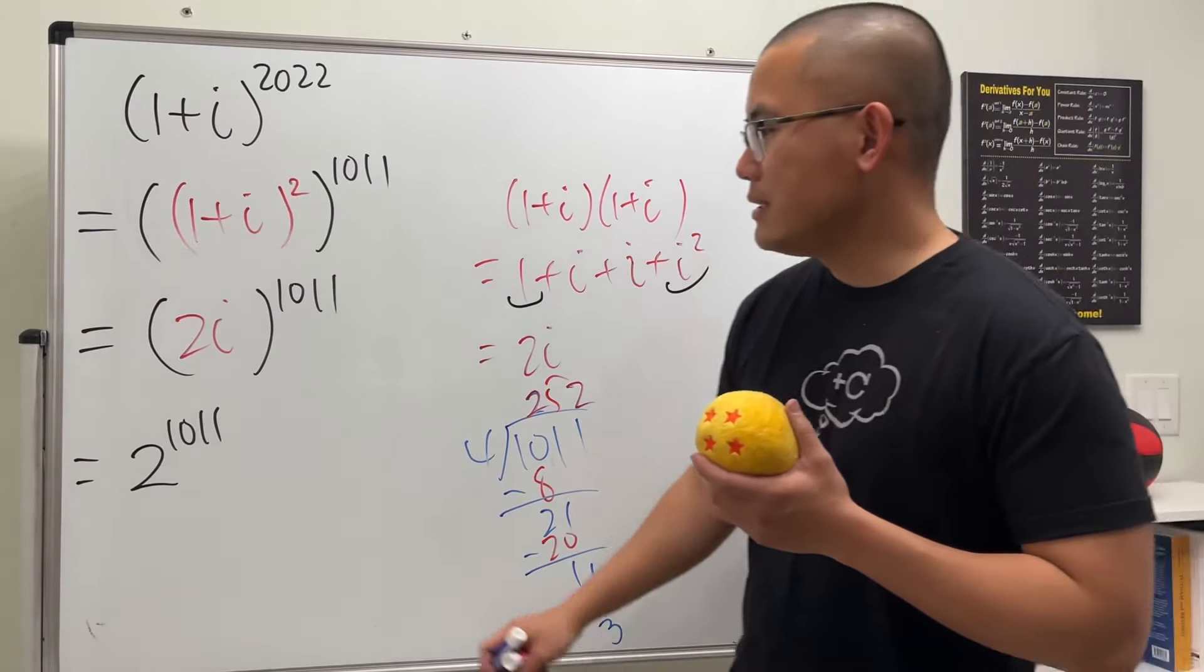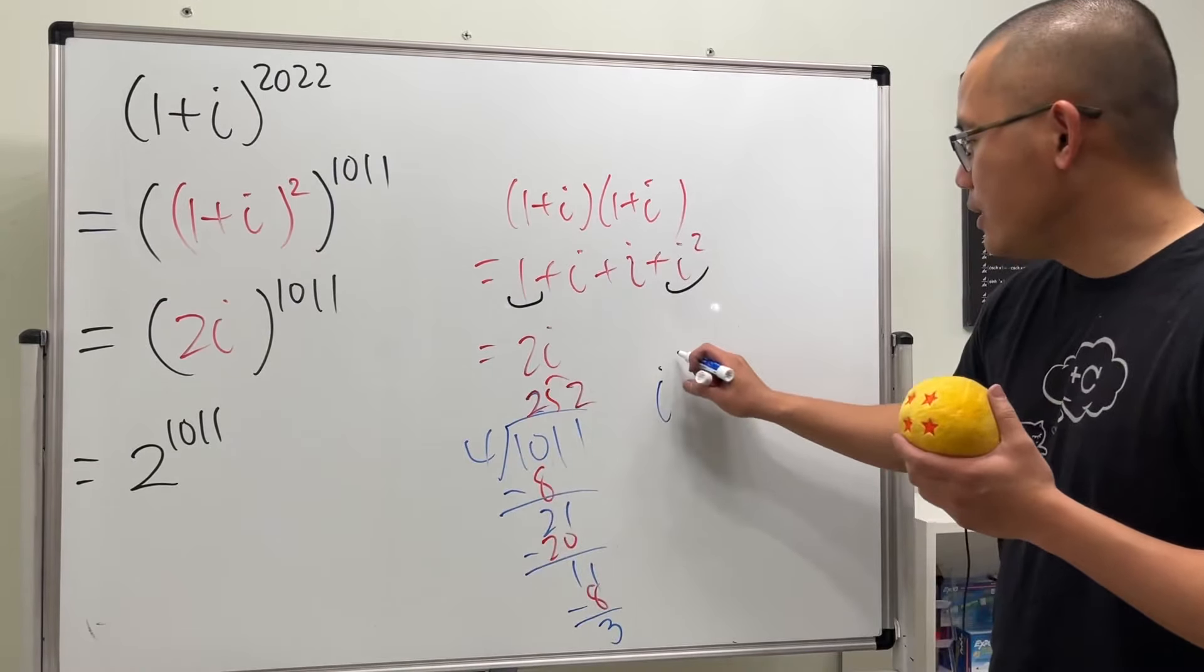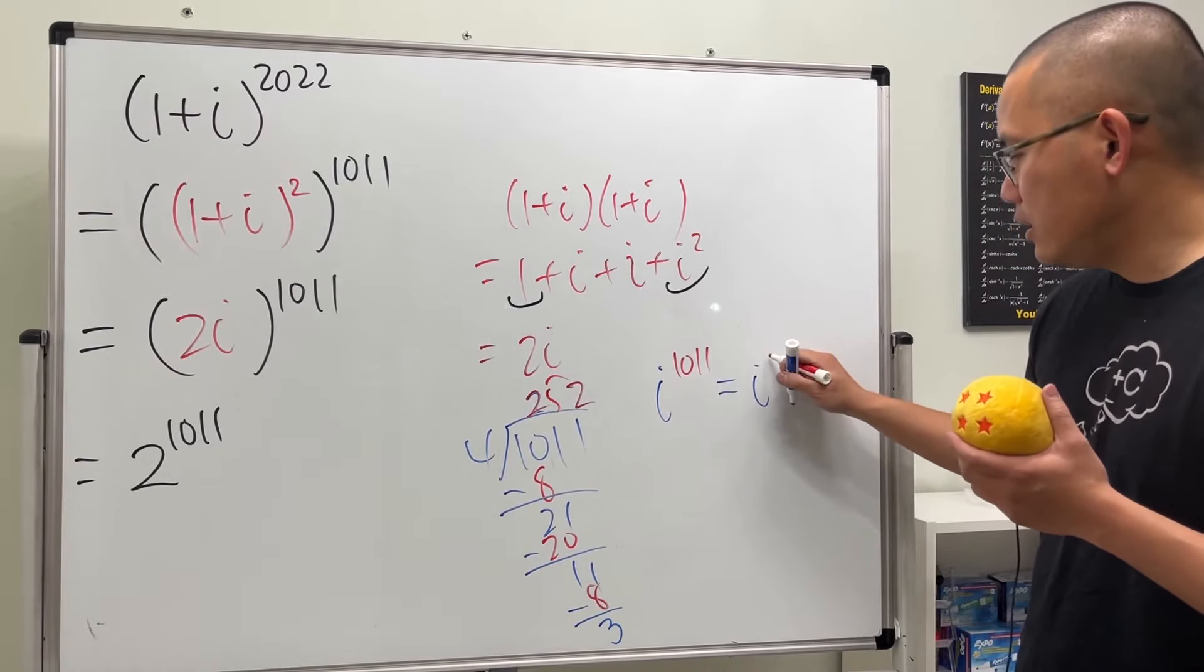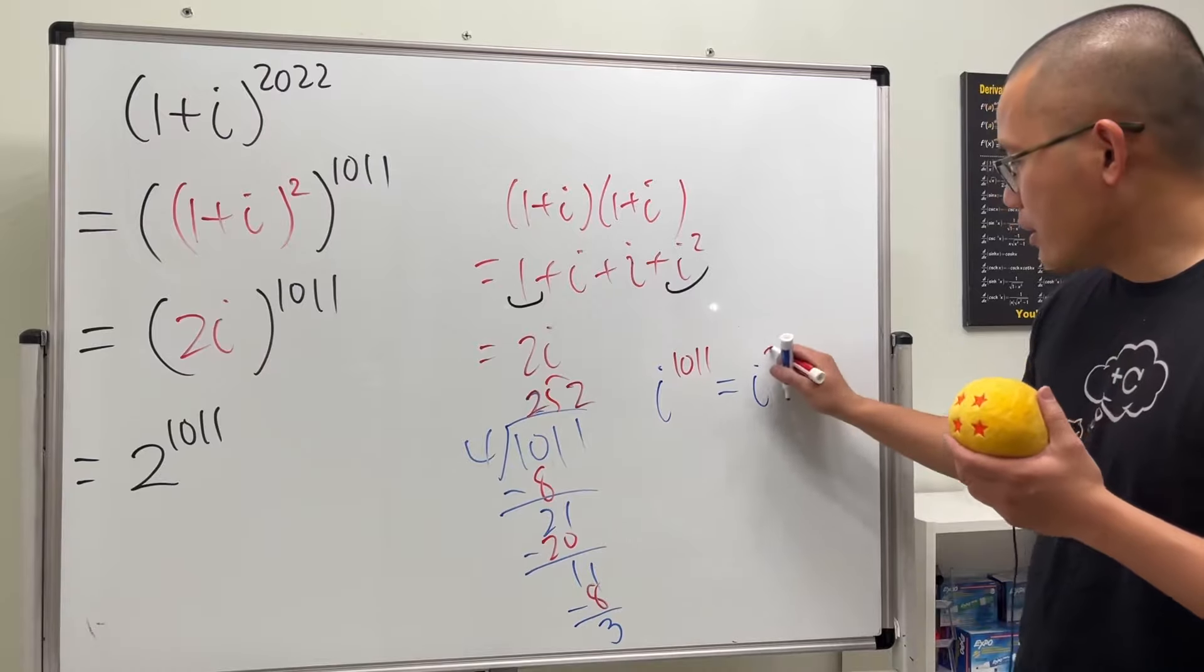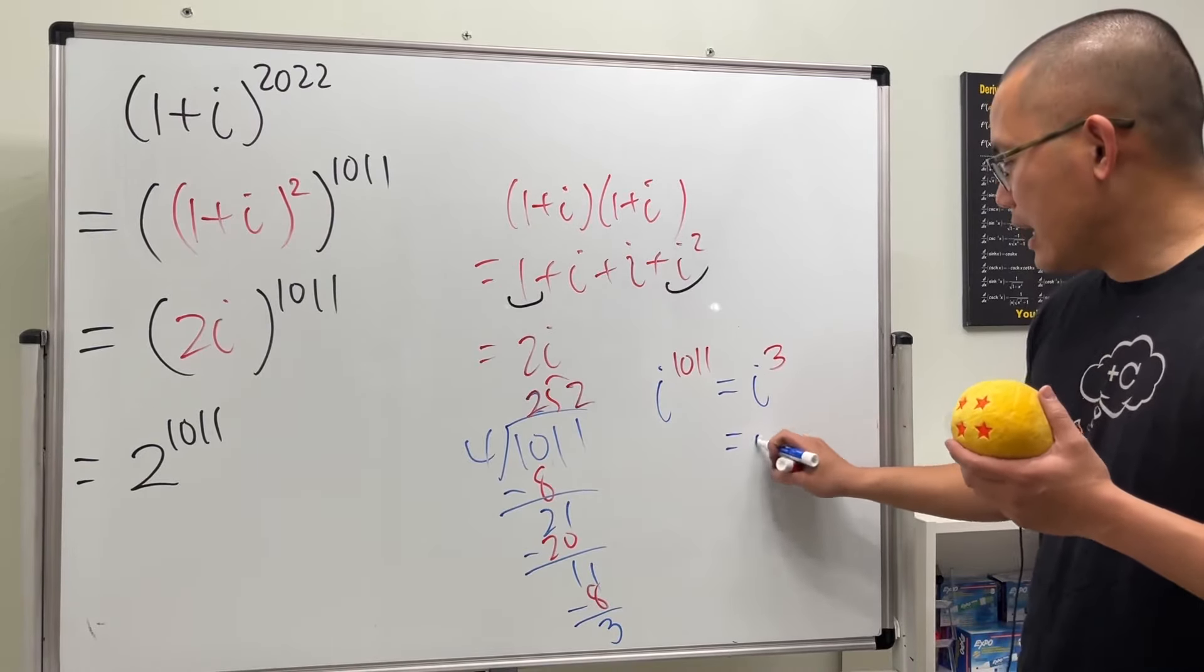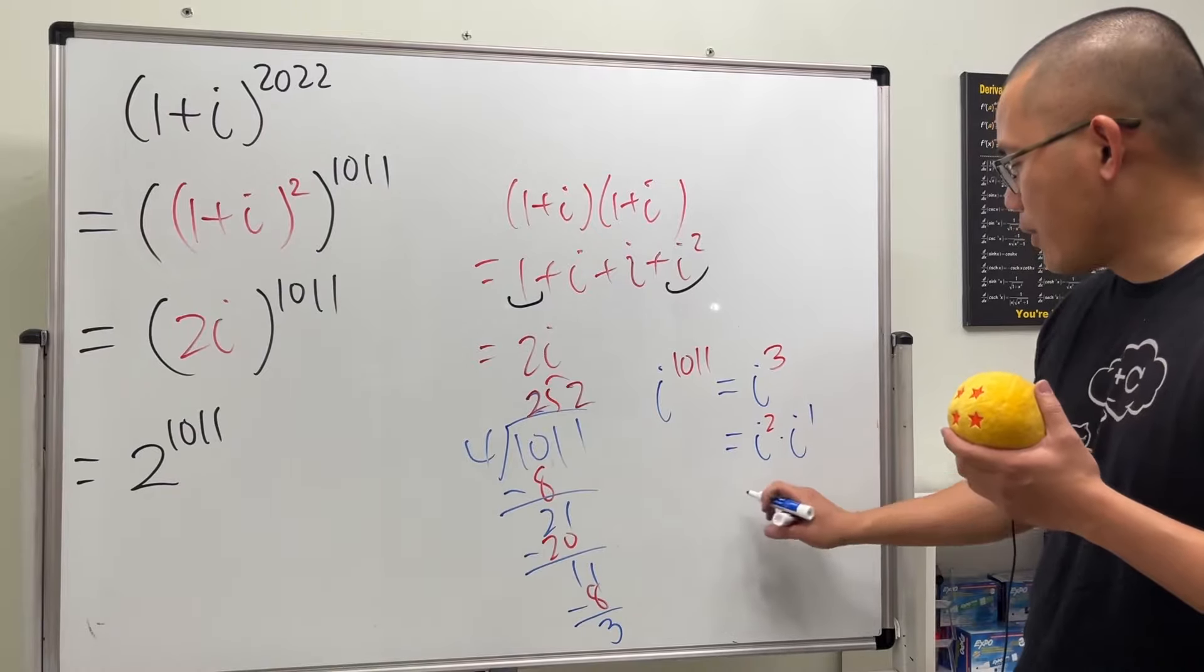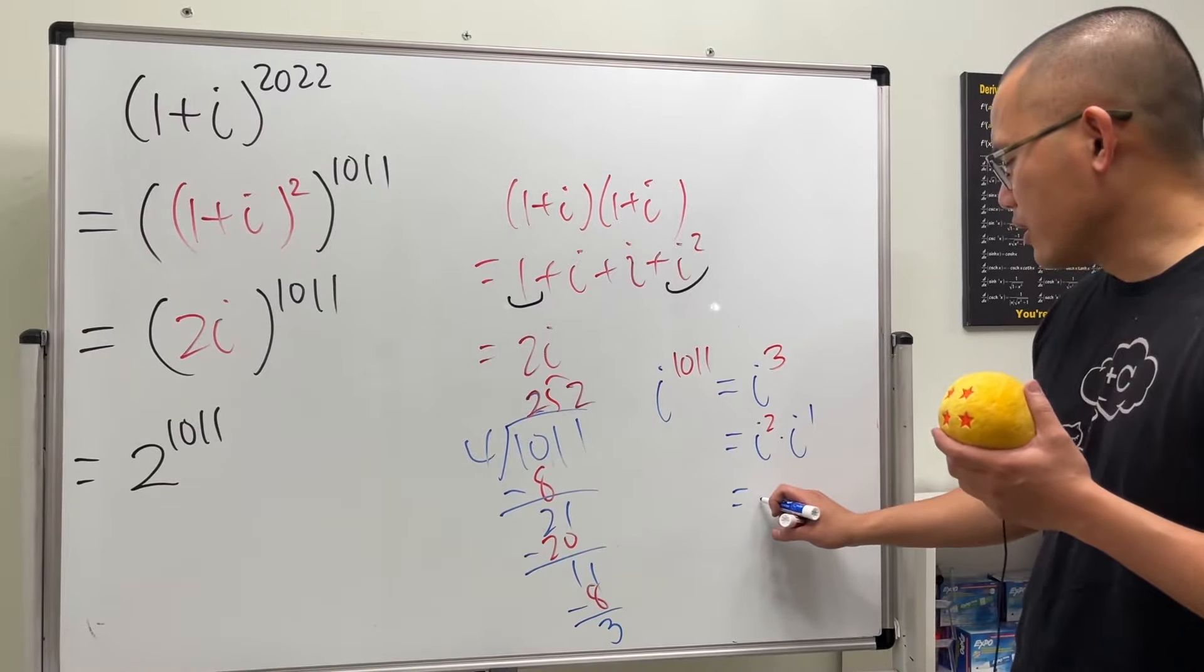So what this means is that i to the 1011 is equivalent to i to the 3rd power, and i to the 3rd power is the same as i to the 2nd power times i to the 1st power. This is negative 1, so altogether it's negative i.